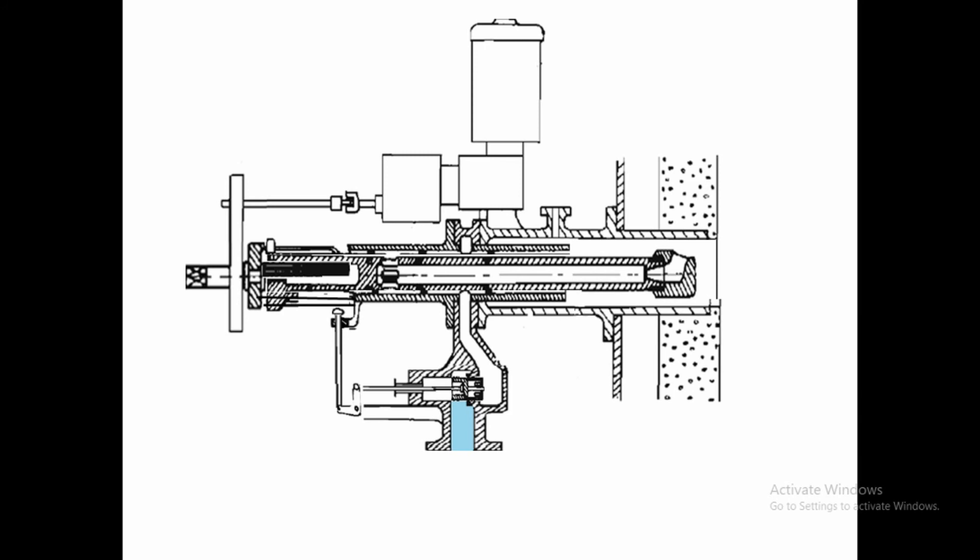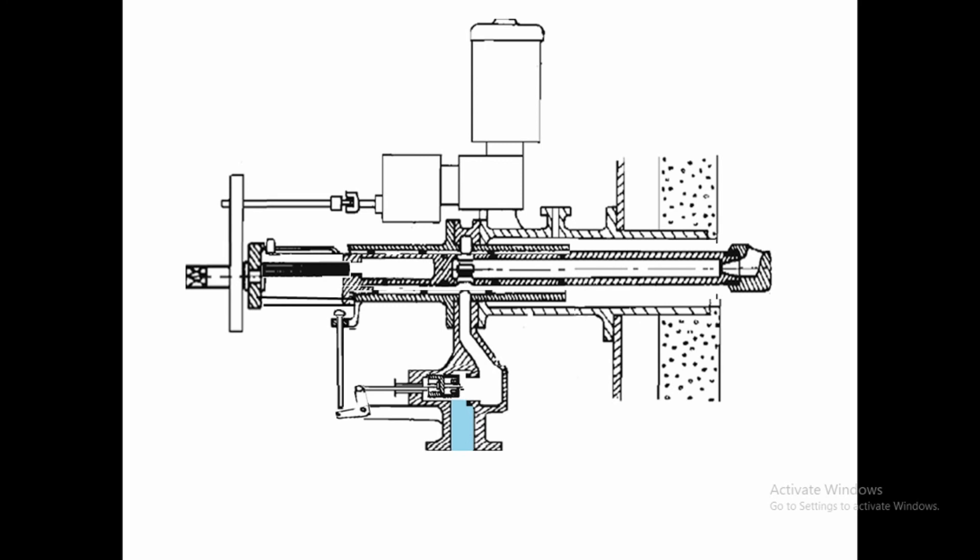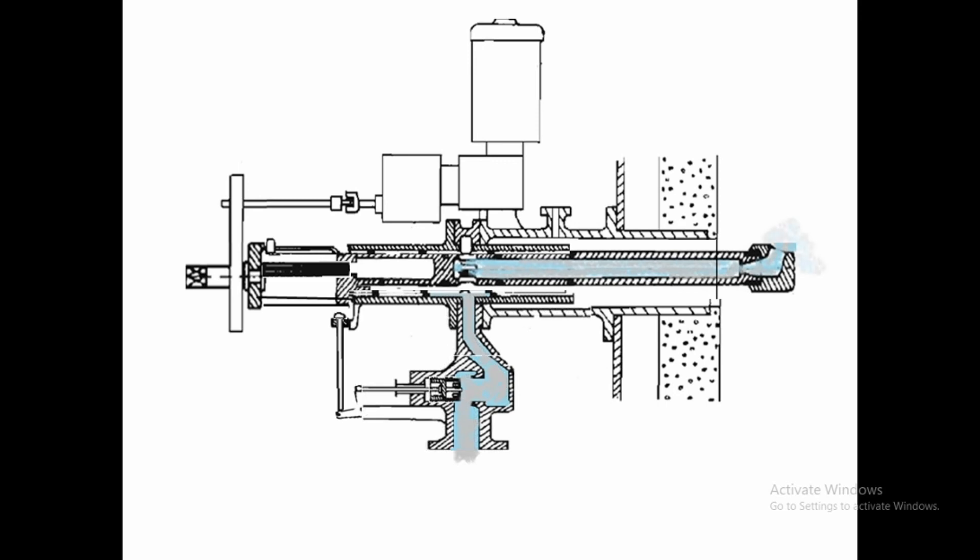And when the double seat valve goes out, as you see in the animation, this moves down, steam goes out through this portion. And the steam starts to exit the soot blower and starts to impinge on the sooted surface.